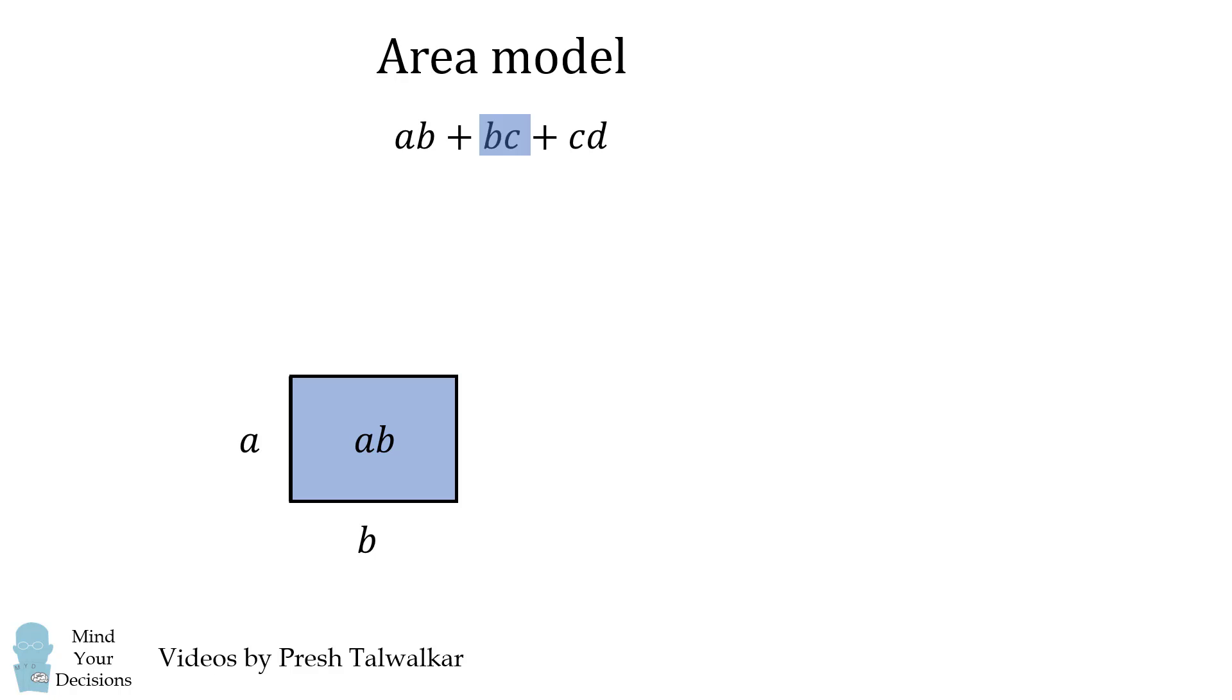To get BC, we add a length of C, and this rectangle will have an area of BC. To get CD, we add a width of D, and this rectangle will be an area of CD. Now just for fun, let's complete this rectangle. This final rectangle here will have an area of AD.